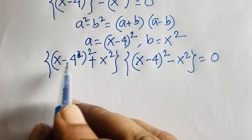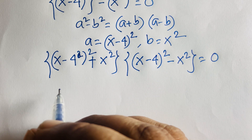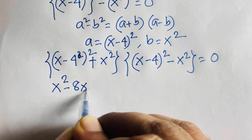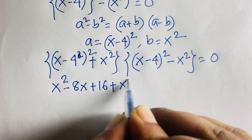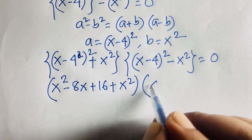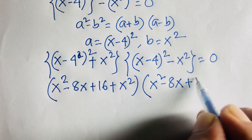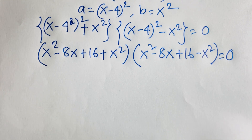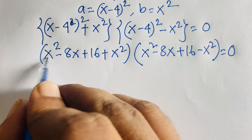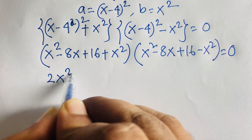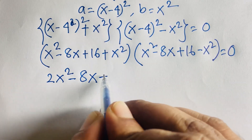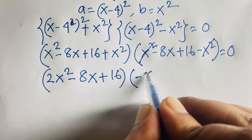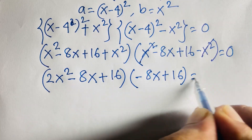Now expanding (x-4)² using the identity (a-b)² = a² minus 2ab plus b², we get x² minus 8x plus 16. So the second factor becomes x² minus 8x plus 16 minus x² equals 0. The x² terms cancel, leaving minus 8x plus 16.